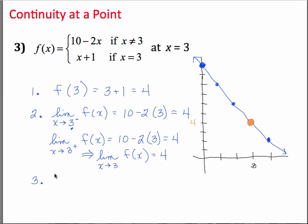The third requirement is that the function value, in this case at x equals 3, has to equal that limit, which we see that it does. They both equal 4. So therefore, we can conclude that this function f of x is continuous at x equals 3.